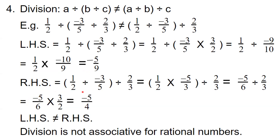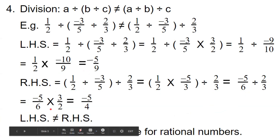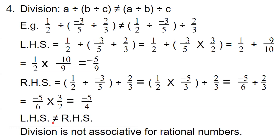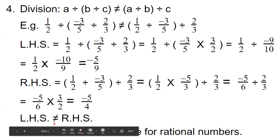Now for RHS: first we have two fractions in the bracket, division, so we change into multiplication. 1/2 multiplied by reciprocal minus 5/3, again divided by 2/3. The first bracket simplifies to minus 5/6, then divided by 2/3. Again division changing into multiplication: minus 5/6 multiplied by 3/2, equal to minus 5/4. Here LHS and RHS values are different, so LHS is not equal to RHS. Therefore, we can say that division is not associative for rational numbers.